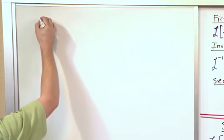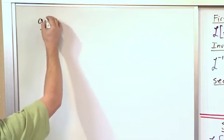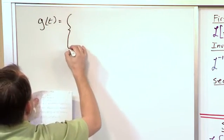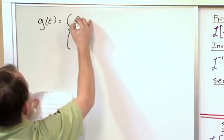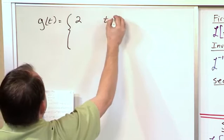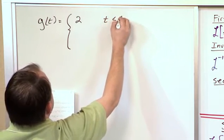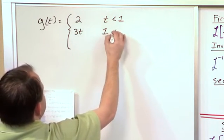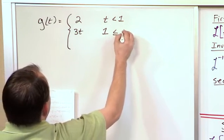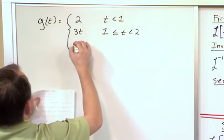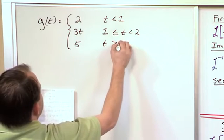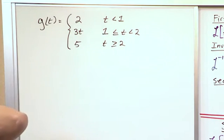So what we have here is a more complicated function g of t. We actually looked at this one before, but we never took the Laplace Transform. It's a value of 2 when t is less than 1, a value of 3t when it's between 1 and 2, and a value of 5 when t is greater than or equal to 2. So that's the piecewise version.